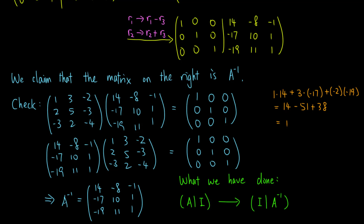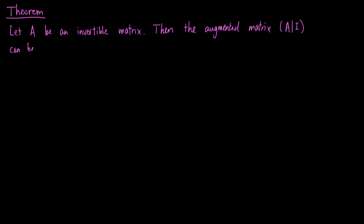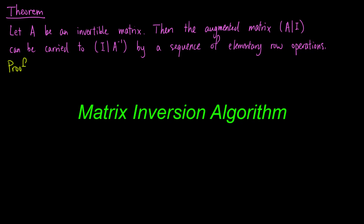Such a method to find the inverse of a matrix can be generalized to any invertible matrix, and this result is recorded in the following theorem. Let A be an invertible matrix; then the augmented matrix [A | I] can be carried to [I | A⁻¹] by a sequence of elementary row operations. This is called the matrix inversion algorithm.